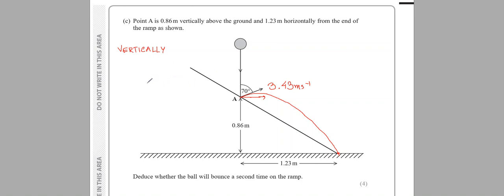What's going on vertically? The initial velocity is 3.43 cos 70. The total displacement is negative 0.86 meters. Acceleration is negative 9.81 meters per second squared. Time is unknown, so let's use this equation.